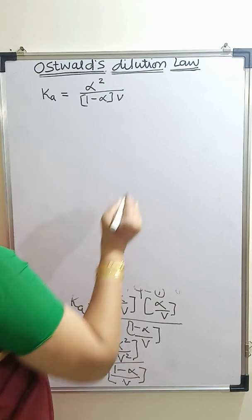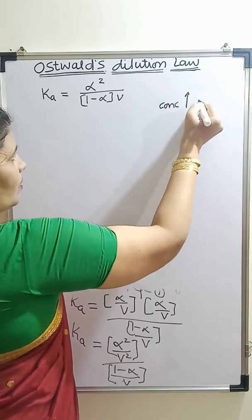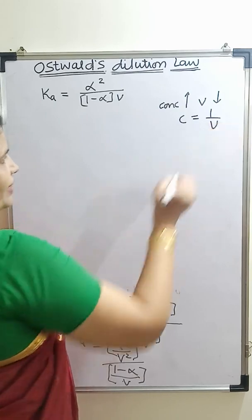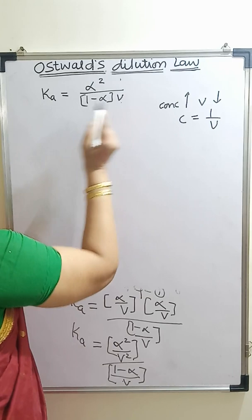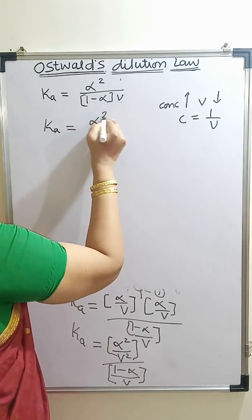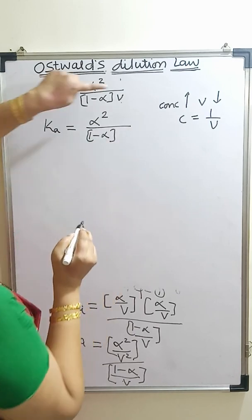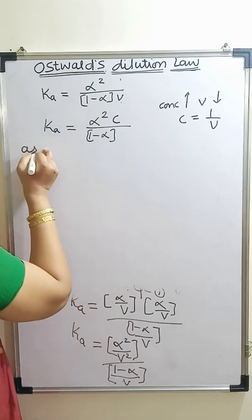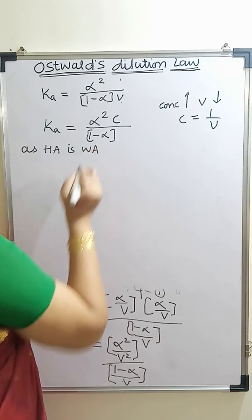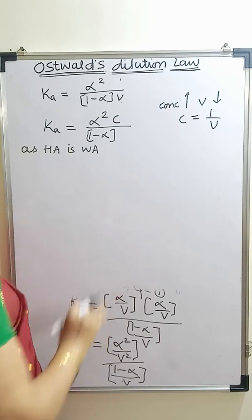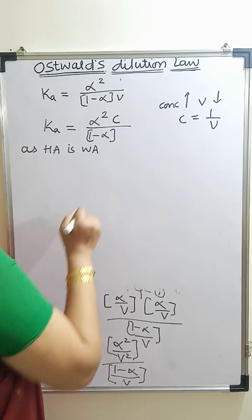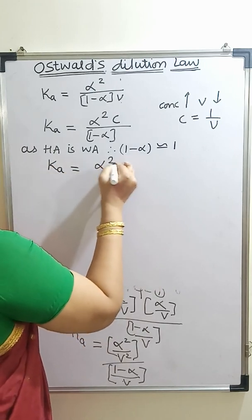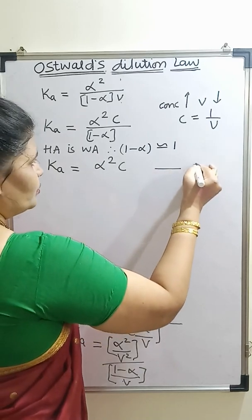One very important concept: as concentration increases, volume decreases — there is an inverse relation, so concentration C equals 1/V. Taking this into consideration, Ka equals alpha² / (1 − alpha) × C. Since Ka is a very weak acid, it dissociates to a lesser extent, so more HA remains and 1 − alpha is nearly equal to 1. Substituting that, Ka = alpha² × C. This is the third equation used for calculations.